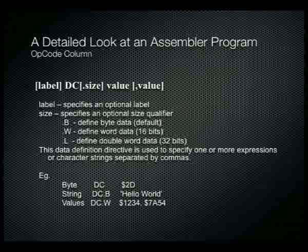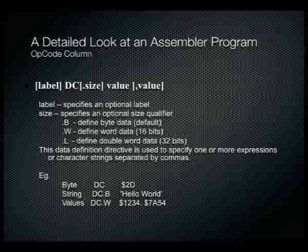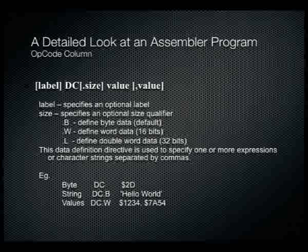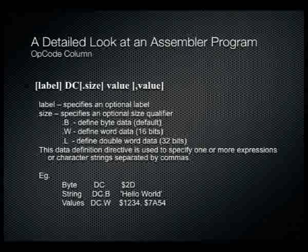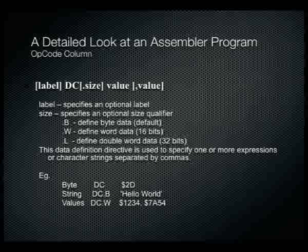If you want to define 16-bit values, you can use DC.w to specify that each element is a word in size, then list the values — for example, 'values DC.w $1234, $7A54'. The label 'values' will point to the first word in memory, and the second value will be at 'values + 2' because each word is 2 bytes.